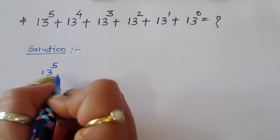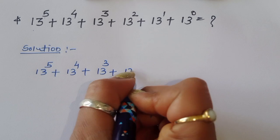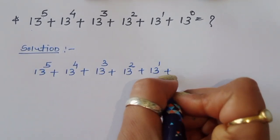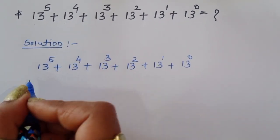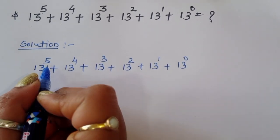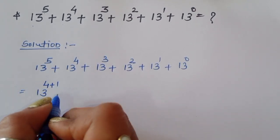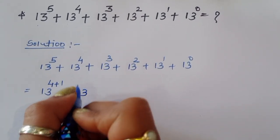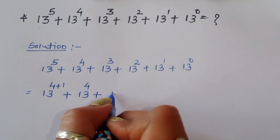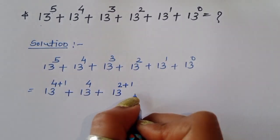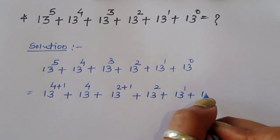The question is 13 power 5 plus 13 power 4 plus 13 power 3 plus 13 power 2 plus 13 power 1 plus 13 power 0. Now we can make some changes in the powers. 13 power 5 — we can write 5 as 4 plus 1. So 13 power (4 plus 1) plus 13 power 4 plus 13 power 3 — this power 3 we can write as 2 plus 1. So 13 power (2 plus 1) plus 13 power 2 plus 13 power 1 plus 13 power 0.